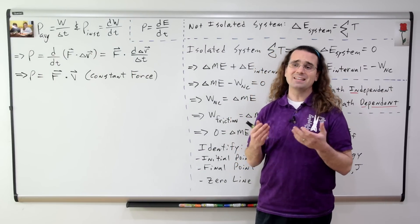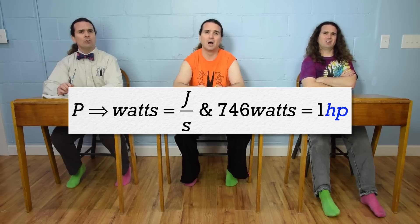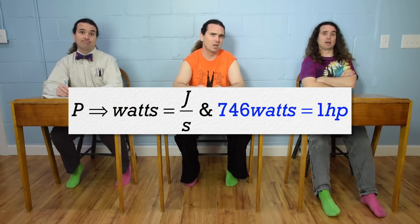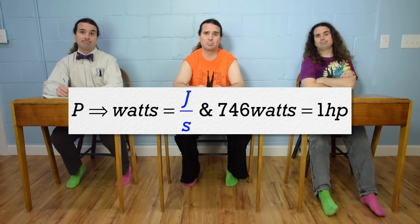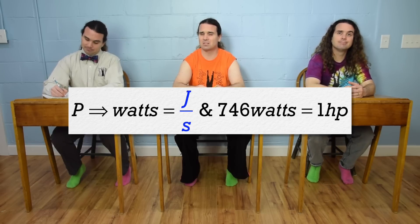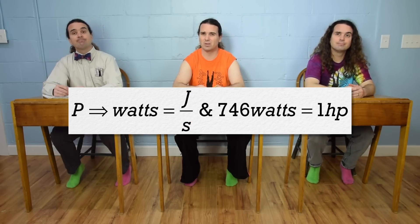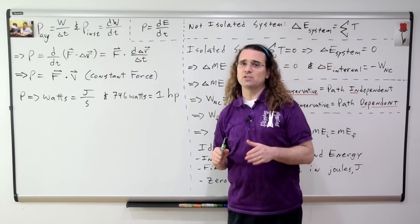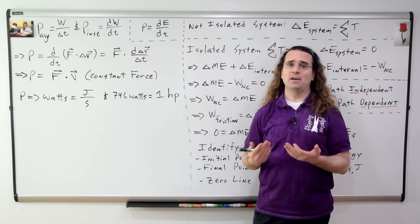What are the SI units for power? Horsepower is the English unit for power. Watts are the SI unit for power. And 746 watts equals one horsepower. Watts are joules per second. You do not need to memorize that there are 746 watts in one horsepower.